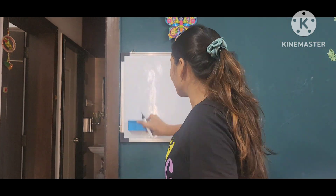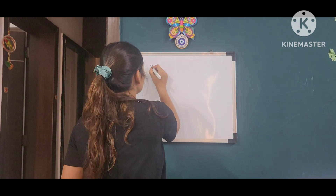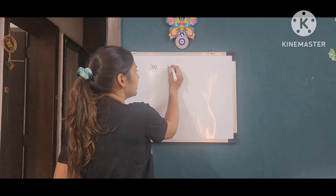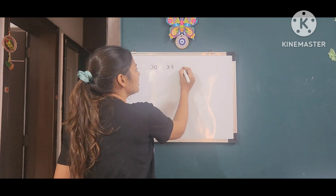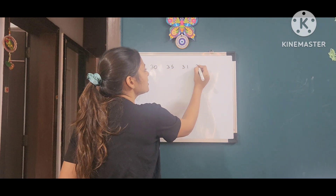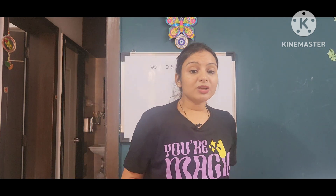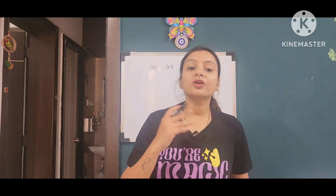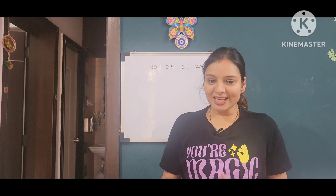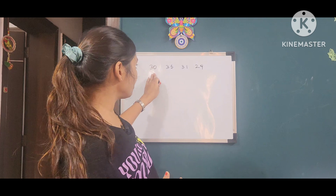We will tell the students how many they wrote in one minute. Suppose someone got 30, someone got 35, someone got 31, someone got 29 points. Now we tell the students that we will play this game again — this time it's a competition with yourself.